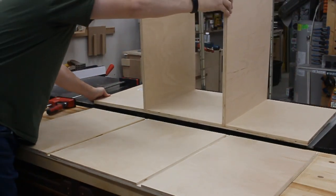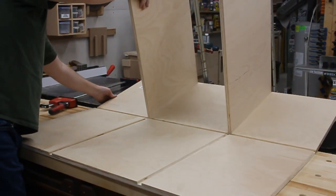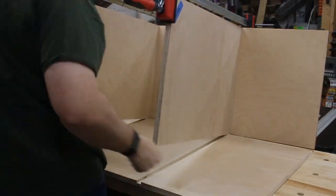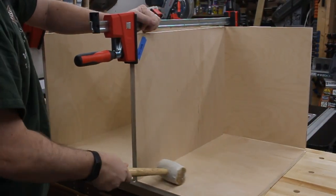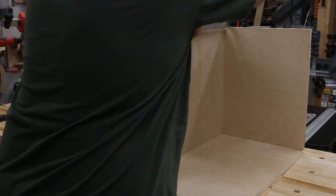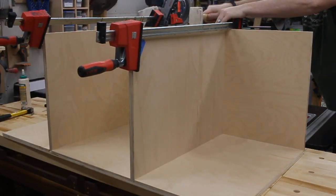Then to add the bottom, I just put some more glue in the dados and along the back rabbet, and then I could just roll the back and the dividers forward. A few taps with the persuader got things lined up, and then I could just add on some clamps.